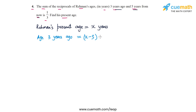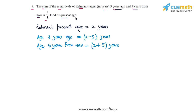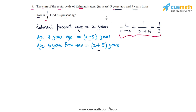Three years ago his age would have been x - 3 years, and his age 5 years from now will be x + 5 years. We are told that the sum of the reciprocals of these two ages is 1/3. The reciprocal of x - 3 is 1/(x - 3), the reciprocal of x + 5 is 1/(x + 5), and their sum equals 1/3. This is how we set up the equation corresponding to this situation.